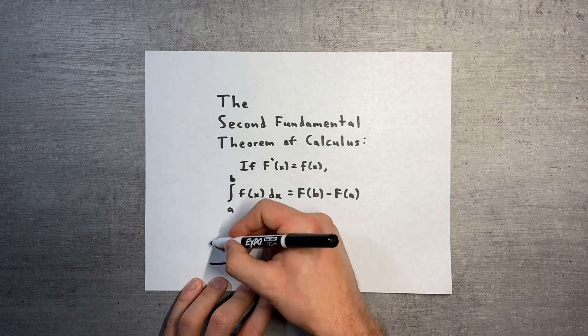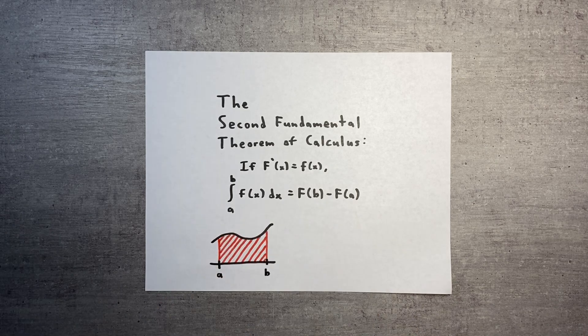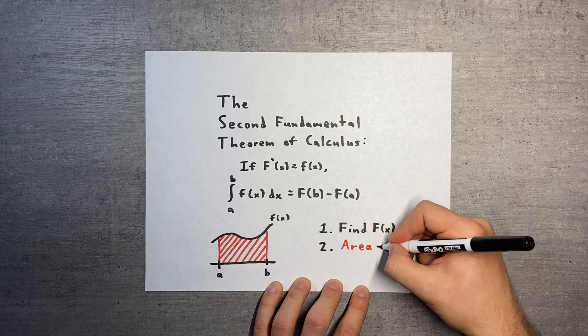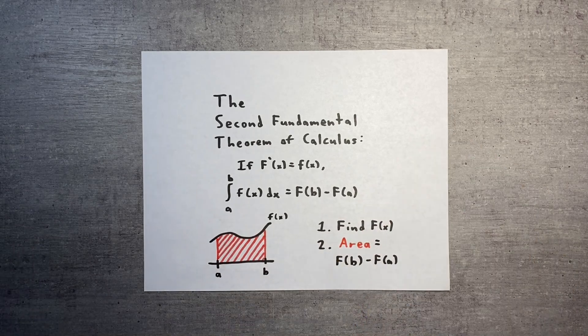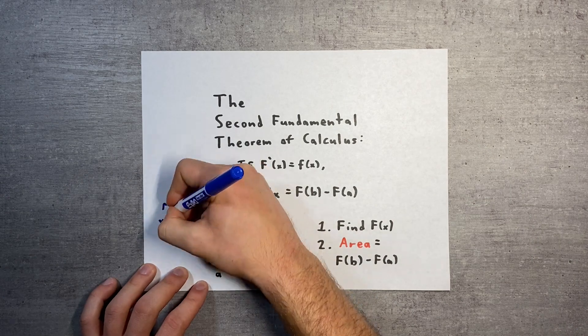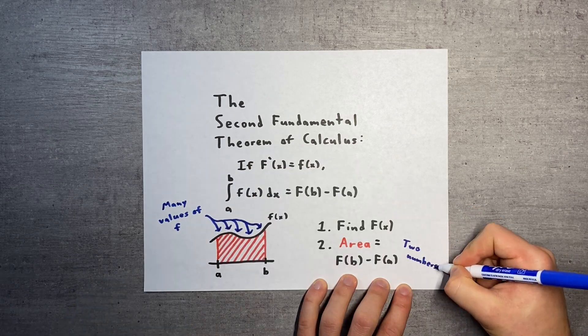The second fundamental theorem gives us a way to calculate the area under a curve, first by finding some antiderivative of the function, and then by evaluating F of b minus F of a. This result feels too good to be true, since the area under a function depends on its value at every point on the interval. How can the area be determined by only F of b and F of a?